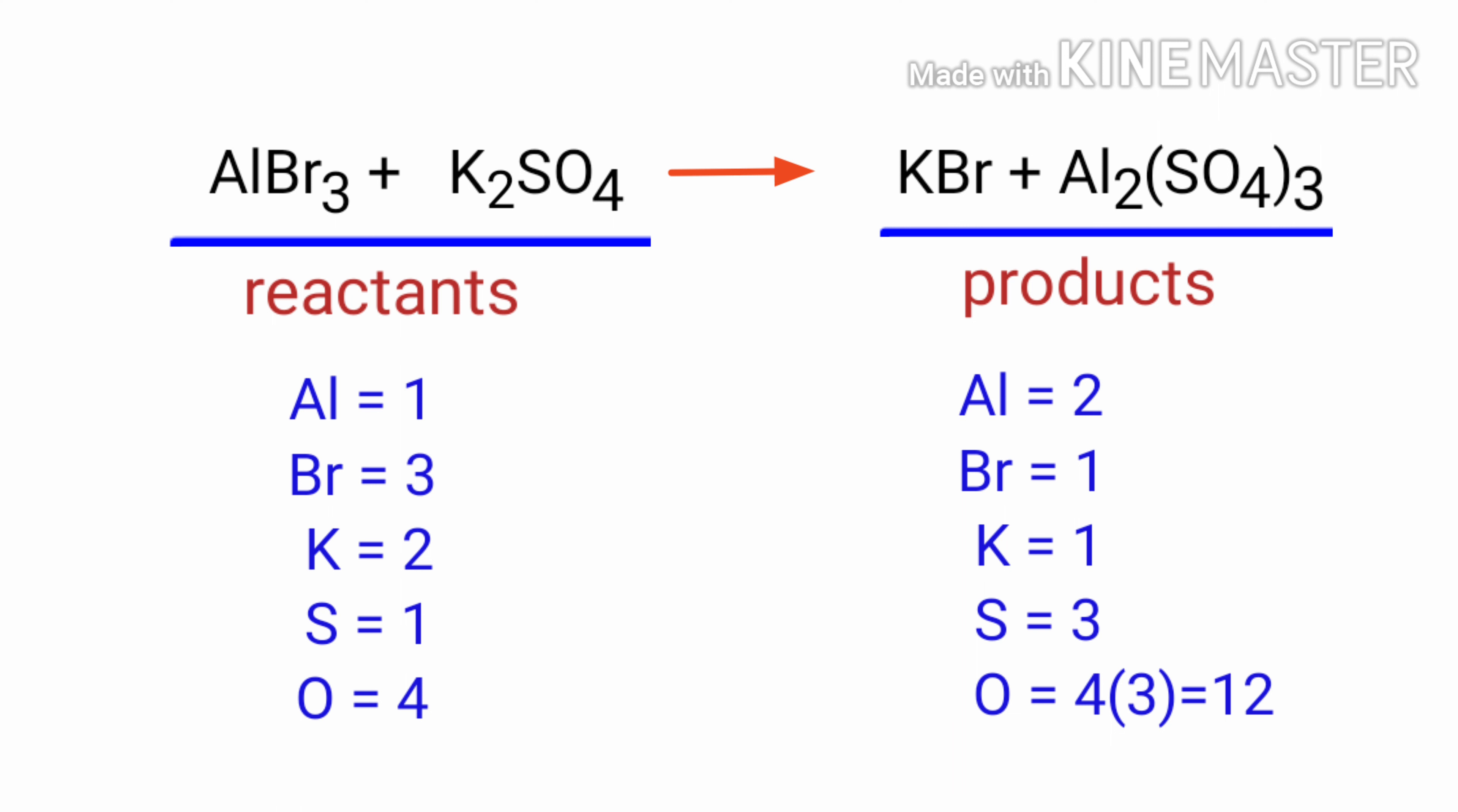If you look at this equation, the equation is not balanced. In the reactants side, there are 1 aluminum atom, 3 bromine atoms, 2 potassium atoms, 1 sulfur atom, and 4 oxygen atoms present. On the products side, there are 2 aluminum atoms, 1 bromine atom, 1 potassium atom, 3 sulfur atoms, and 12 oxygen atoms present. The number of atoms are not balanced on both sides.